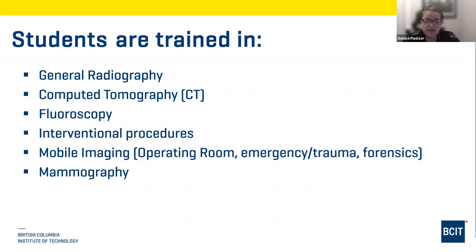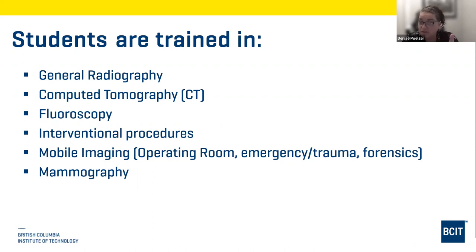Interventional radiography combines CT and fluoroscopy for patients with known illness. For example, if a cardiac patient has a blocked or narrowed blood vessel, an interventional procedure can place a stent inside the vessel to keep it open. A filter can also be placed in the vena cava to collect blood clots and prevent them from traveling to the lungs or brain.